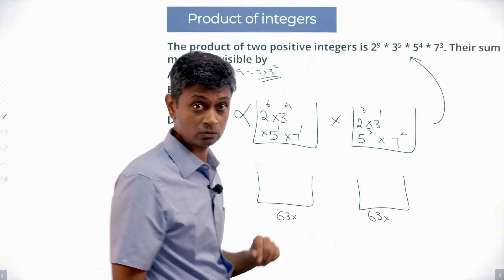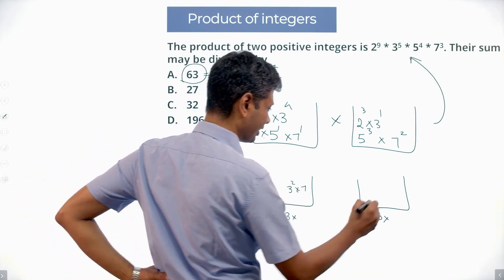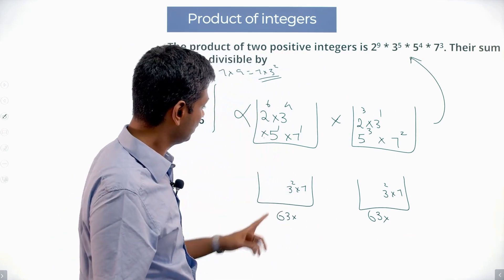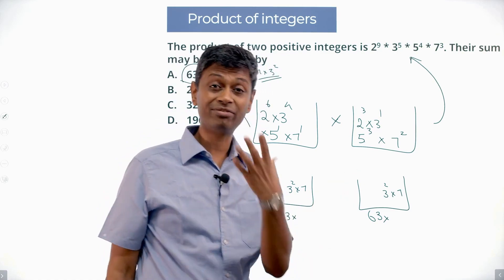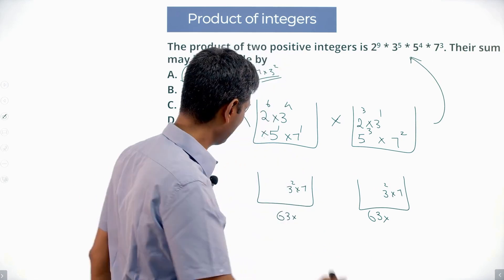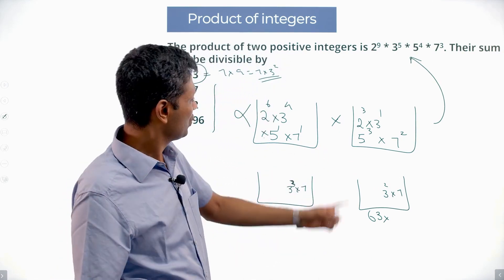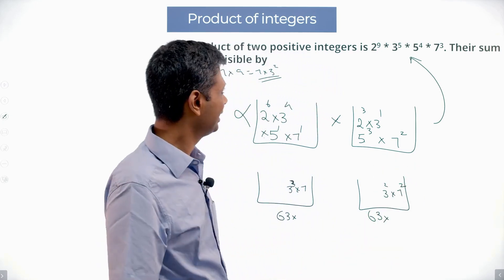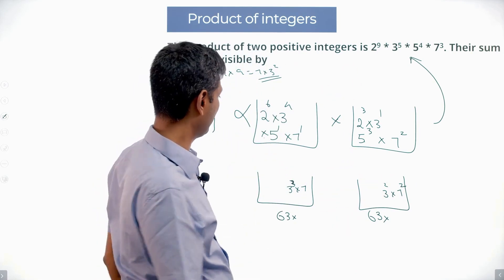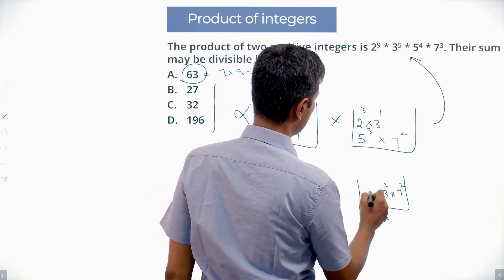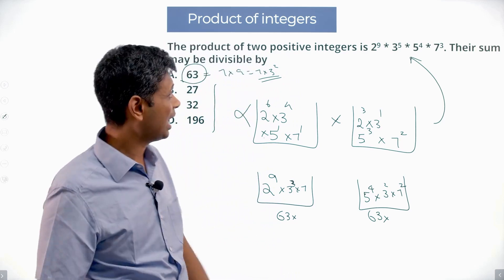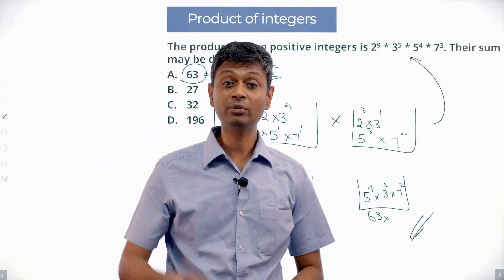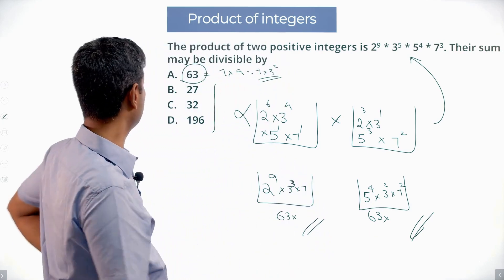I need 3² × 7 in each number. I have five 3s total — I put two 3s here and two 3s there, with one 3 left over (I can keep it in either). I have three 7s — I put one 7 here and one 7 there, with one 7 remaining. Both numbers are multiples of 63. For the remaining factors (2⁹ and 5⁴), I can freely distribute them. This works: one multiple of 63 plus another multiple of 63 is definitely a multiple of 63. So 63 is possible.